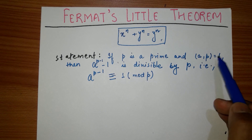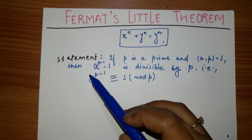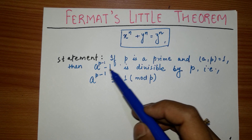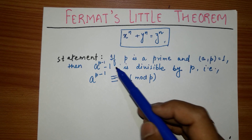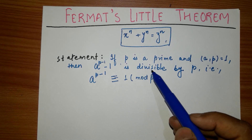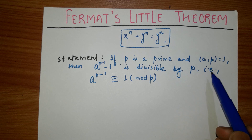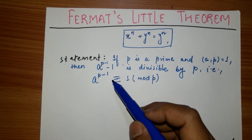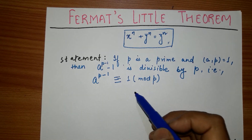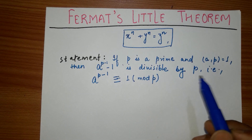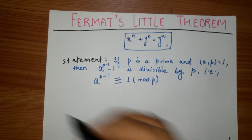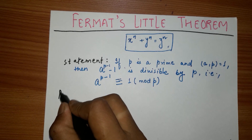So the full statement is: if p is a prime number and the GCD of a and p is 1, then a^(p−1) − 1 is divisible by p, that is, a^(p−1) is congruent to 1 mod p. Now let us see the proof.